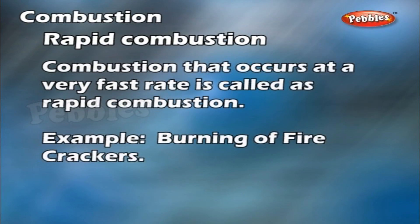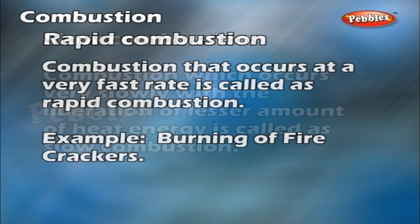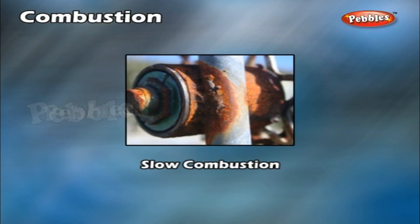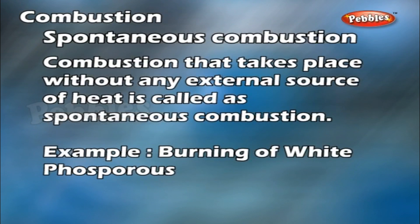Rapid combustion: Combustion that occurs at a very fast rate is called rapid combustion. Example: Burning of fire crackers. Slow combustion: Combustion which occurs very slowly with the liberation of a lesser amount of heat energy is called slow combustion. Example: Rusting of iron.